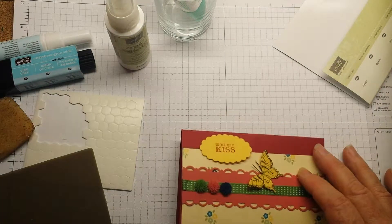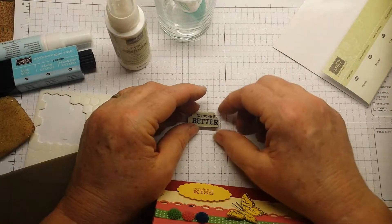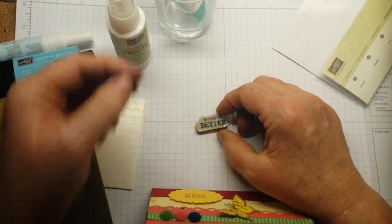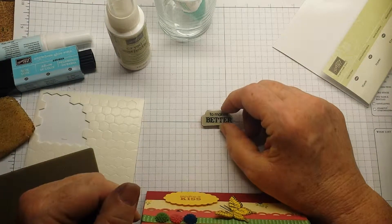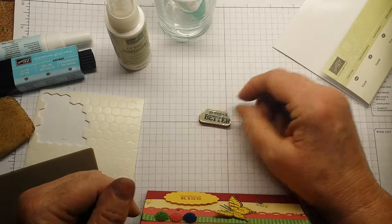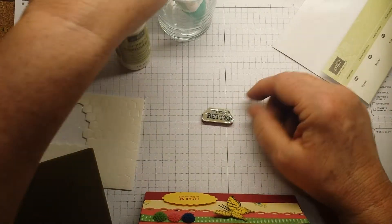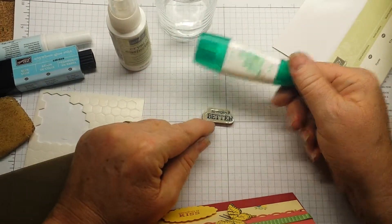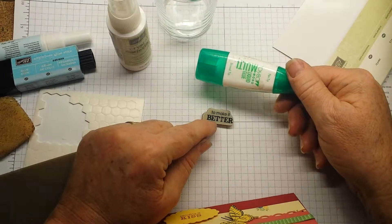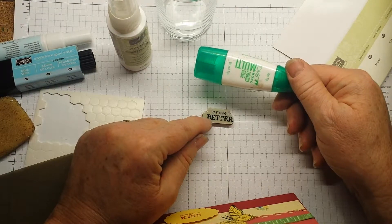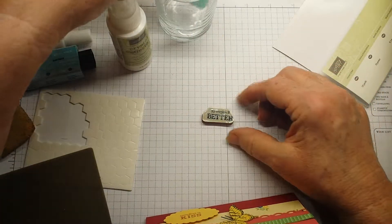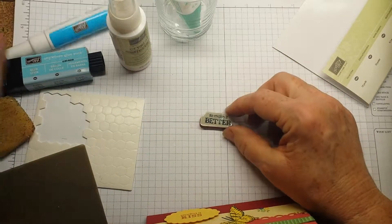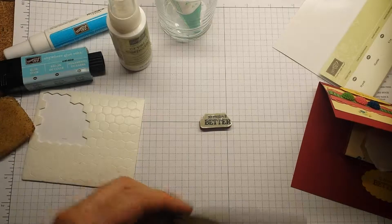So those are my adhesives. One other thing, some people like to, our dog is deciding he's not going to sit here. Some people, especially on their smaller stamps, use a little bit of glue to hold them to the block. And two adhesives that I use for that. One is a little bit of liquid Tombow multi-purpose glue. And then let it dry. You might even want to let it dry overnight so it's a temporary bond. Or the two-way glue stick. And so that's a couple of adhesive tips.